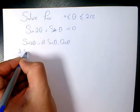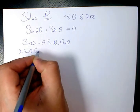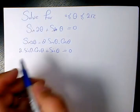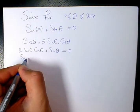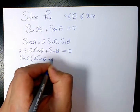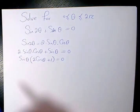So it's going to be 2 times sine theta times cosine theta plus sine theta equals 0. Now I can factor sine theta. Then it's going to be sine theta times 2 cosine theta plus 1 equals 0. That's the factored form.